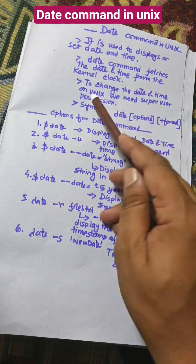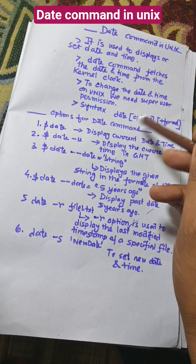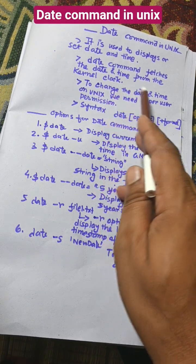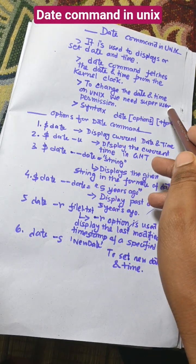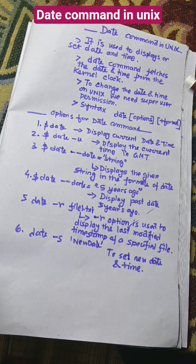To change the date and time on Unix, we need super user permission. If I want to change the date and time, we need to enter super user mode, that is administrator mode, with the help of the su command.